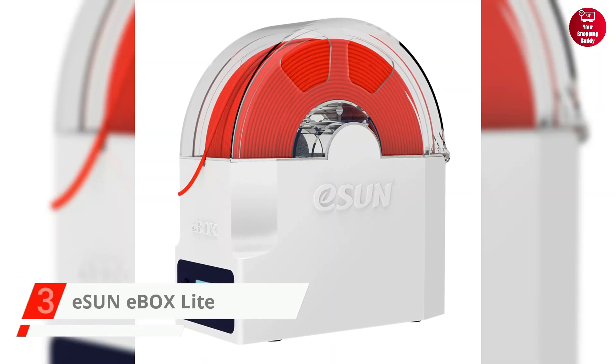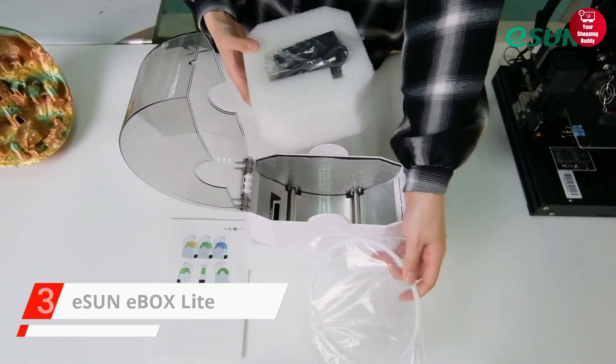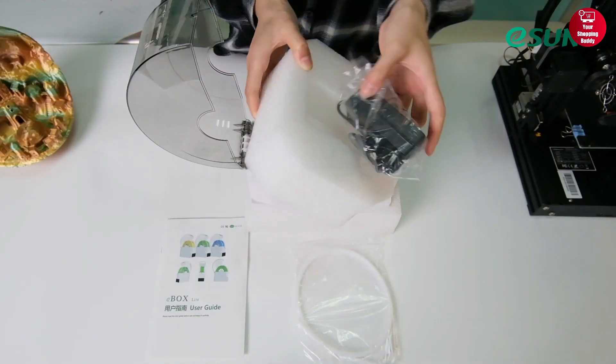Coming up next is the E-Sun E-Box Filament Dryer Box. It's an ideal solution for anyone looking to reduce the risk of printing failure due to moisture.